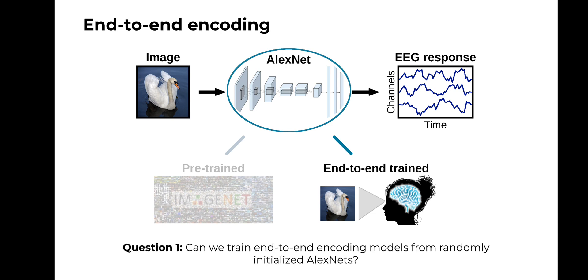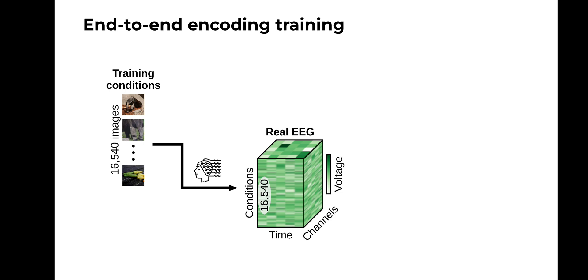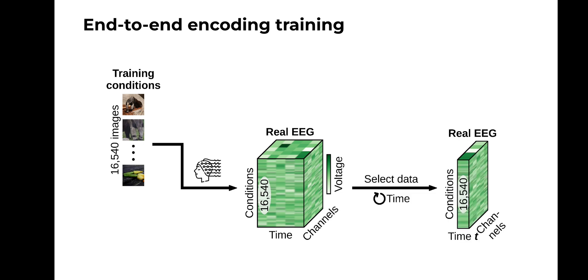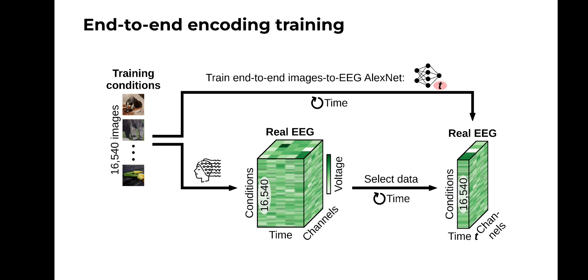So with the first question, we asked whether we can leverage the unprecedented size of our EEG dataset to train end-to-end encoding models of the visual brain starting from randomly initialized AlexNet architectures. To train these end-to-end encoding models, we used our training data split — specifically, the real EEG responses for the training images collected during our experiment — and modeled each EEG channel's response at each time point independently. We then gave the same training images as input to randomly initialized AlexNet architectures and trained them to predict the corresponding brain responses.